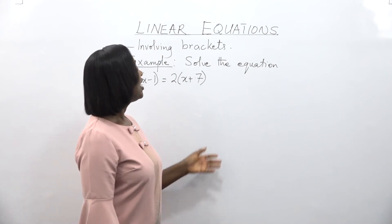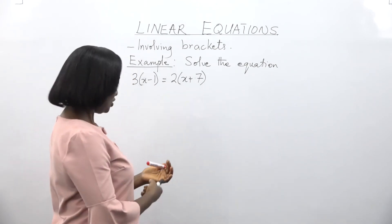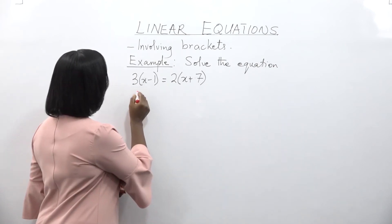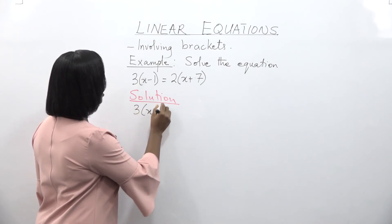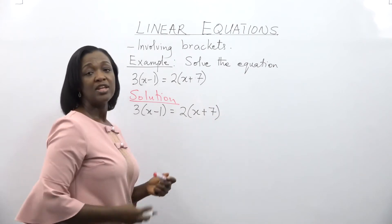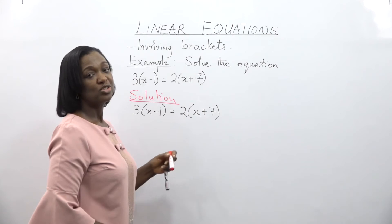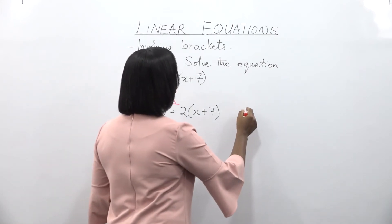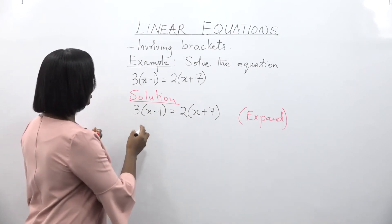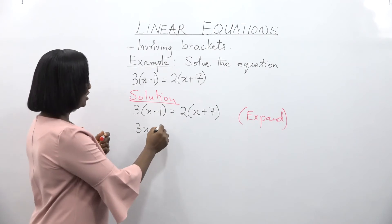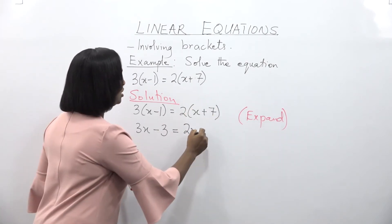In this next example, we want to solve an equation that involves brackets and also has the unknown on both sides of the equality sign. Solution: 3 times (x minus 1) is equal to 2 times (x plus 7). The first step is to open up the brackets, expand, then collect like terms, and then solve for x. Expanding: 3 times x gives 3x, and 3 times minus 1 is minus 3. 2 times x is 2x, and 2 times plus 7 is plus 14.